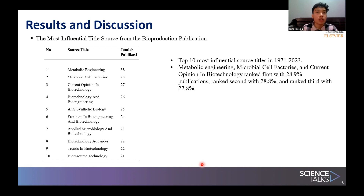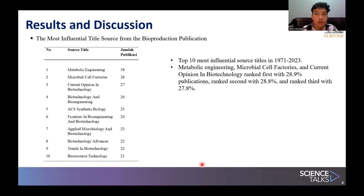In the results and discussion section: the most influential source titles from bioproduction publications — the top 10 most influential source titles in 1971–2023 — show that Metabolic Engineering, Microbial Cell Factories, and Current Opinion in Biotechnology ranked 1st with 28.9% of publications, 2nd with 28.8%, and 3rd with 27.8% respectively.